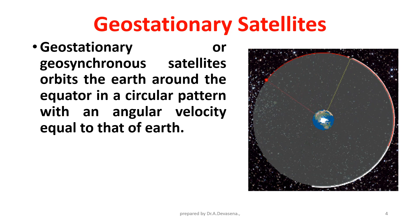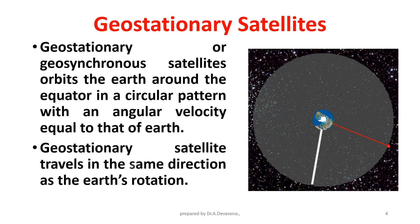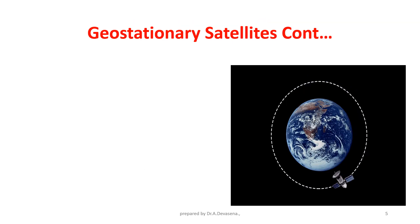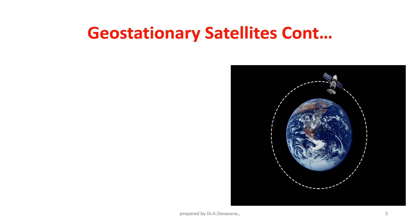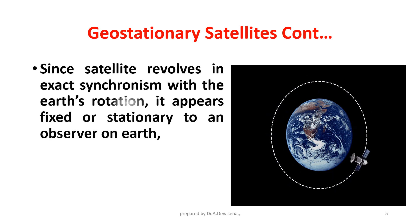Geostationary satellite travels in the same direction as the Earth's rotation. Since the satellite revolves in exact synchronization with the Earth's rotation, it appears fixed or stationary to an observer on Earth. Satellites are called geostationary or geosynchronous satellites.